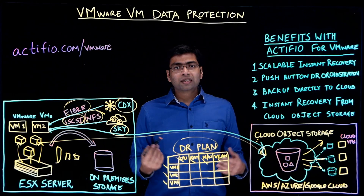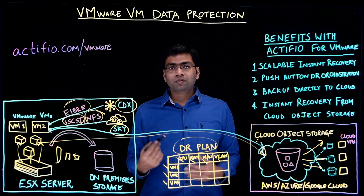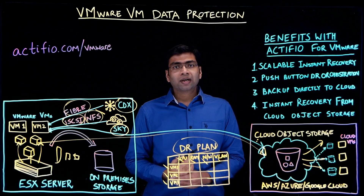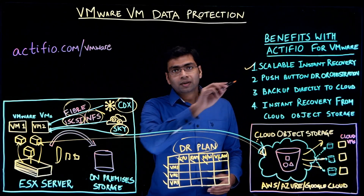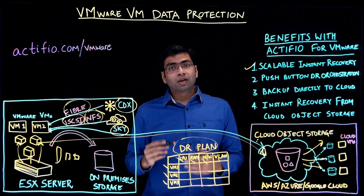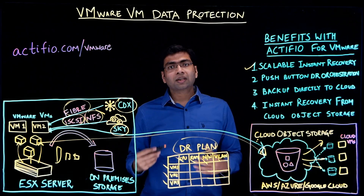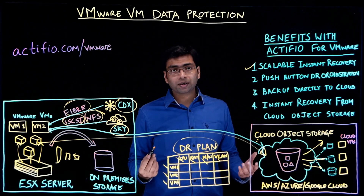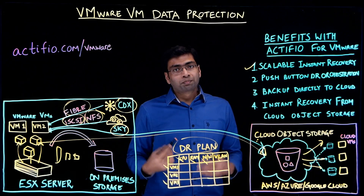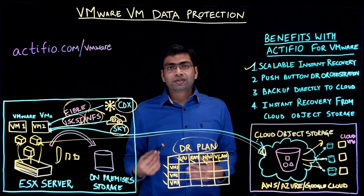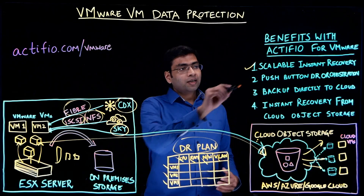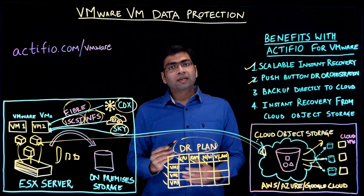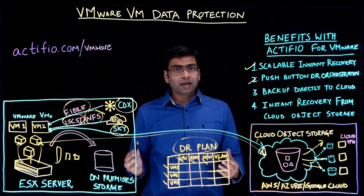To summarize, with Actifio for VMware VM data protection you get scalable instant recovery that lets you recover hundreds and thousands of VMware VMs in minutes and reduces your RTO. You also get push-button DR orchestration that lets you specify the order in which you want to recover tens of thousands of VMs.